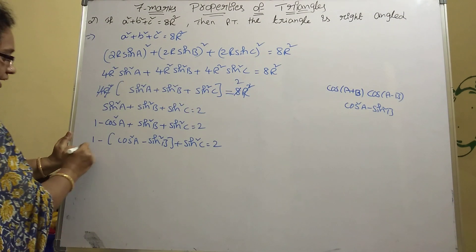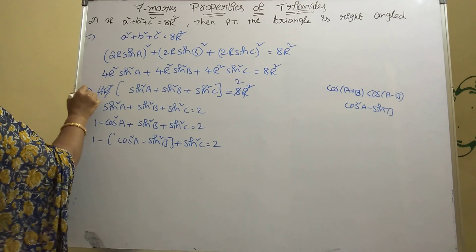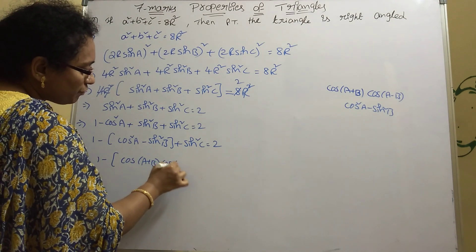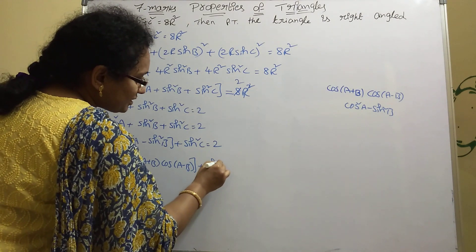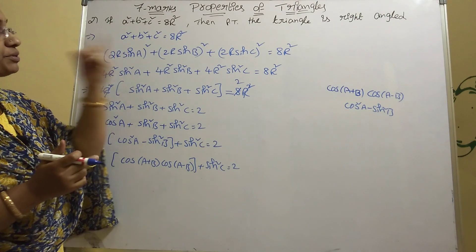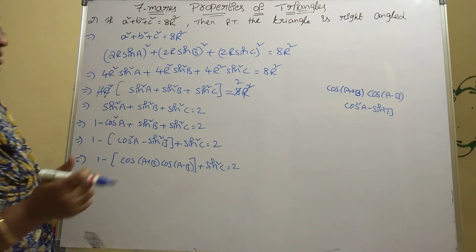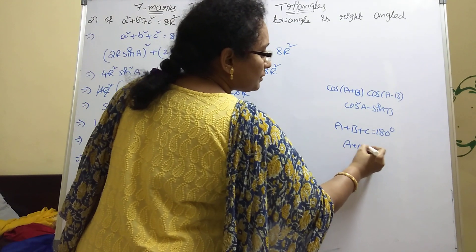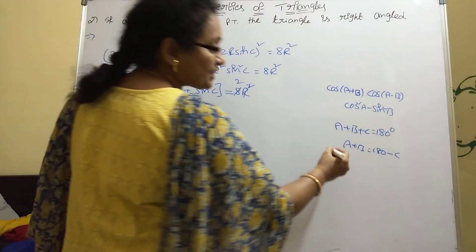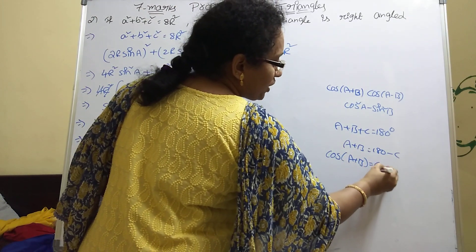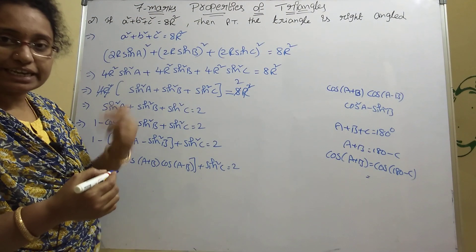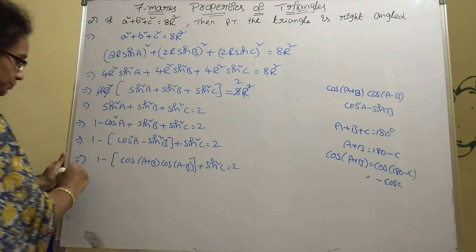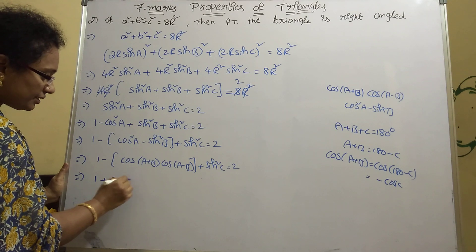Now cos²A − sin²B = cos(A+B)·cos(A−B). In a triangle, A+B+C = 180°, so A+B = 180°−C. Taking cosine on both sides: cos(A+B) = cos(180°−C) = −cosC, since cosine is negative in the second quadrant.